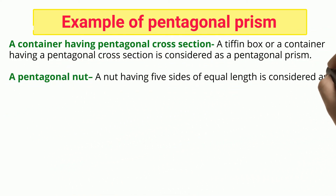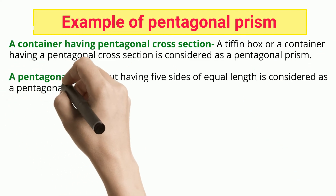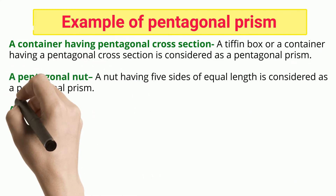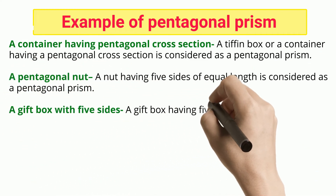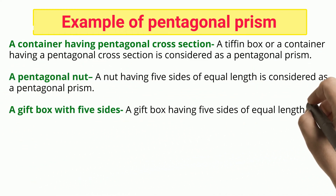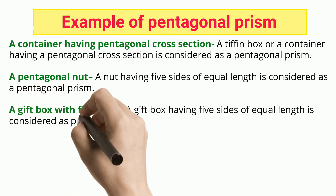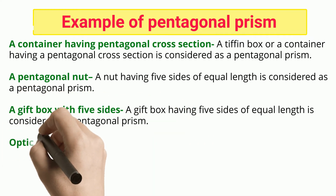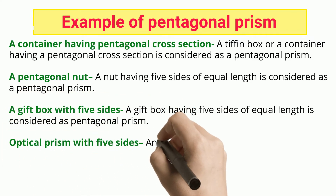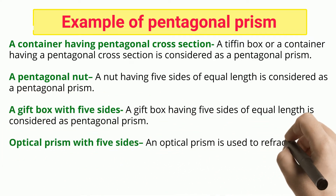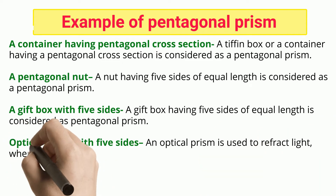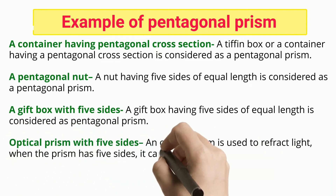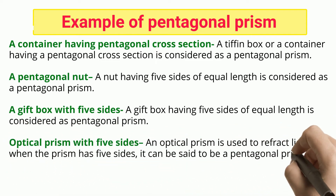A pentagonal nut: a nut having five sides of equal length is considered as a pentagonal prism. A gift box with five sides: a gift box having five sides of equal length is considered as a pentagonal prism.